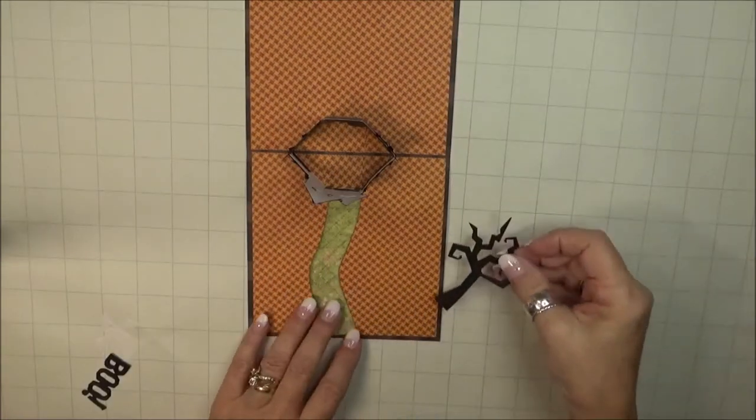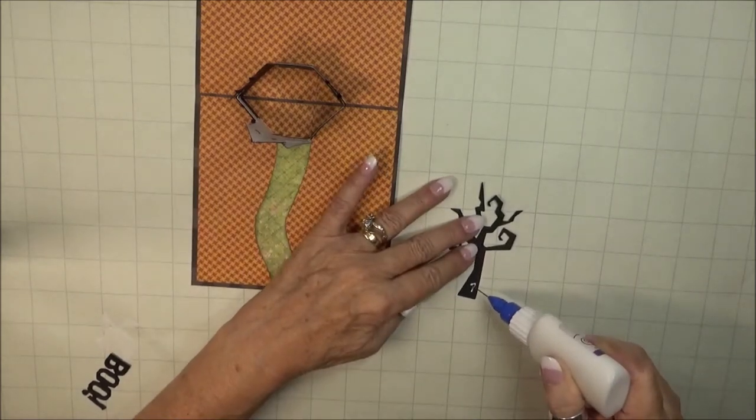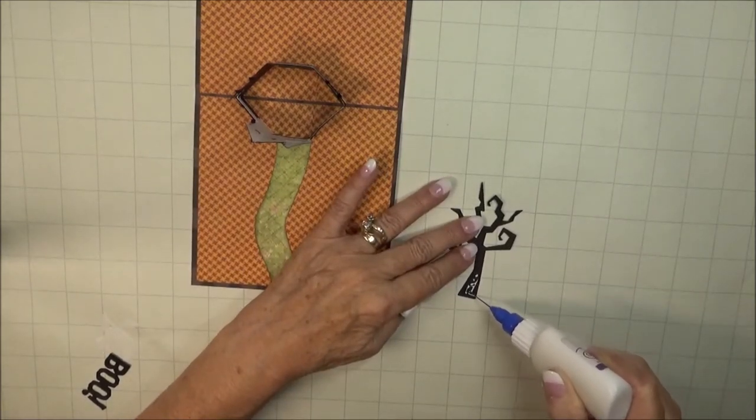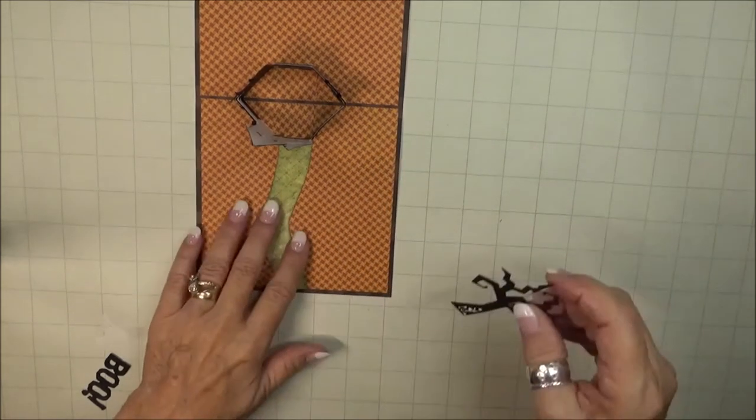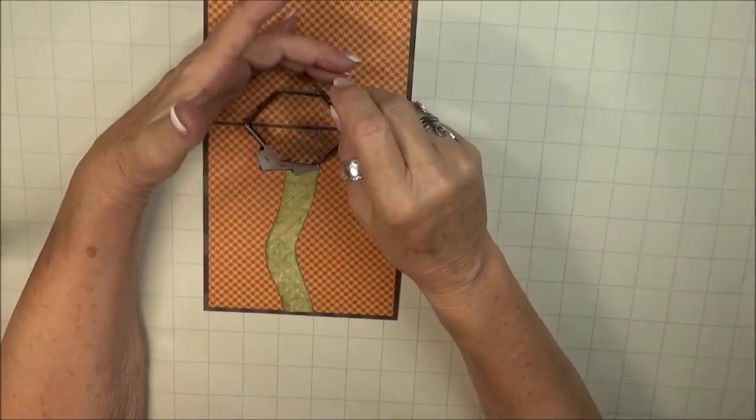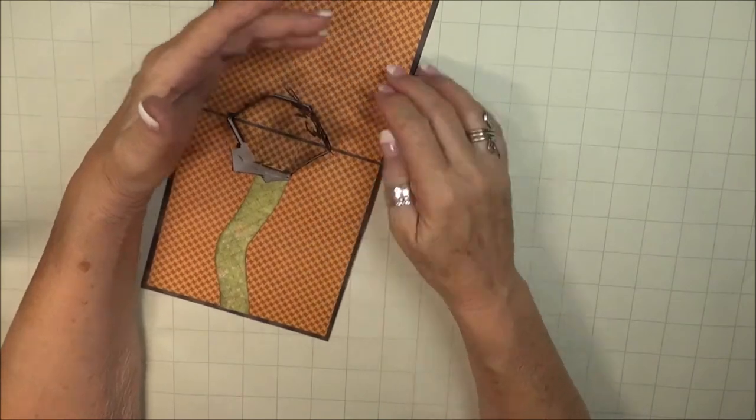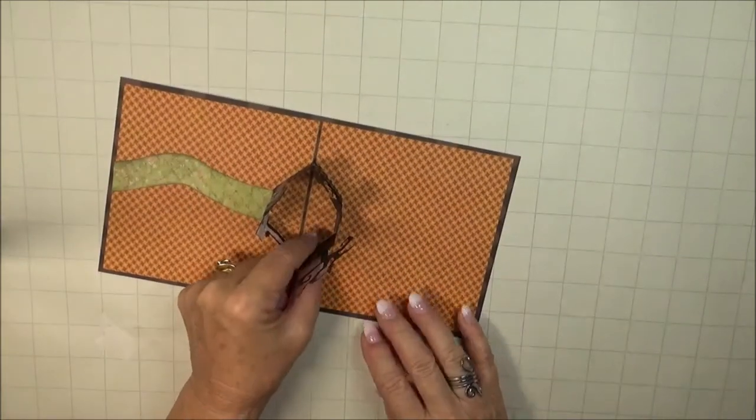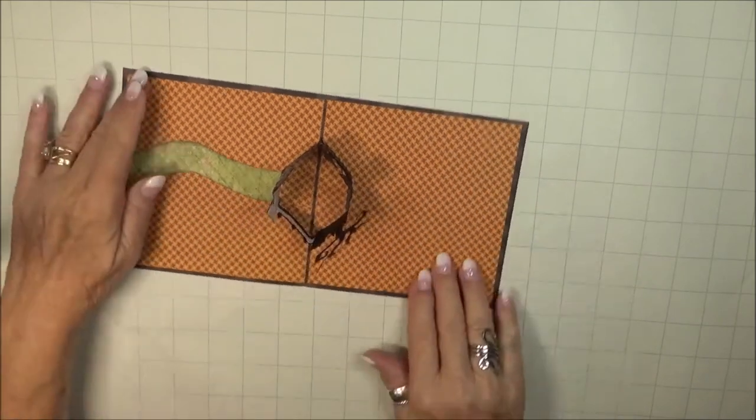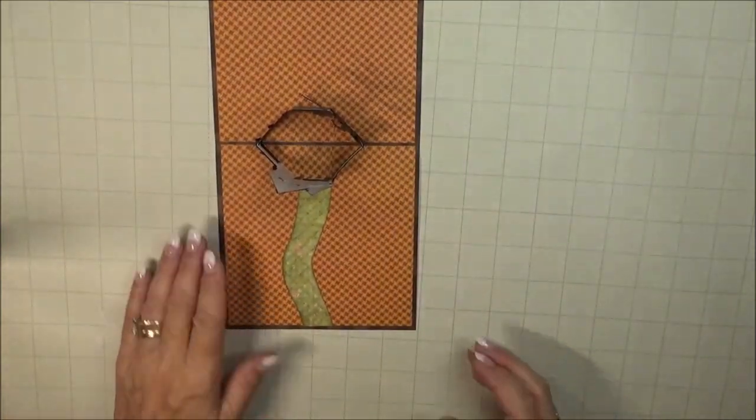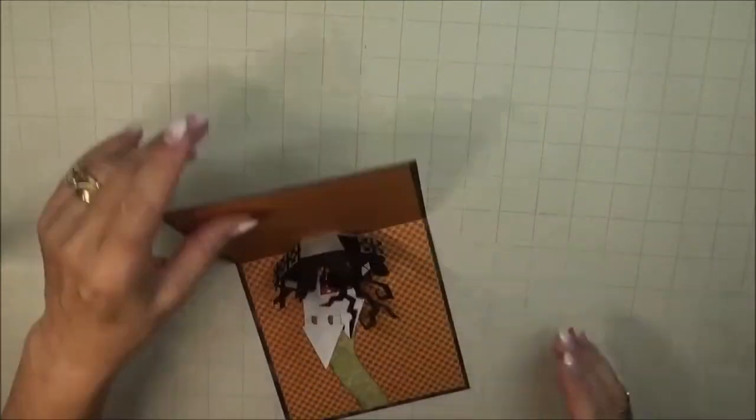I've already added the graveyard to the inside back of the pop-up section, and now I'm going to add a spooky tree from the Halloween Scene die set. I'm going to put some glue on the front part of the trunk and glue it to the back portion of the pop-up. Here you can see why it's so important to use a lightweight cardstock for this section, because too many layers the card would not close correctly. Let's just give it one more little test. Oh yes, I like it. We're good to go.